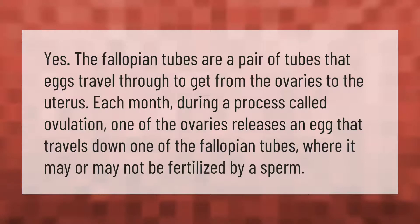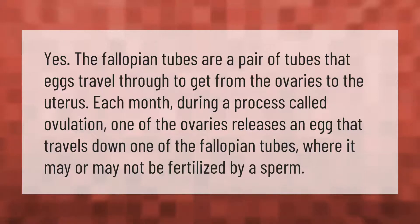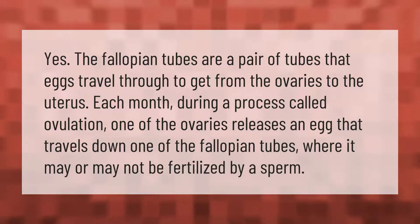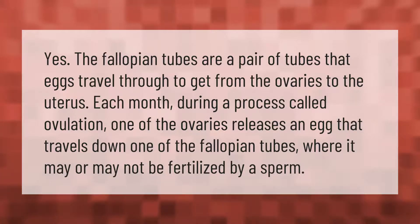The fallopian tubes are a pair of tubes that eggs travel through to get from the ovaries to the uterus. Each month during a process called ovulation, one of the ovaries releases an egg that travels down one of the fallopian tubes, where it may or may not be fertilized by a sperm.